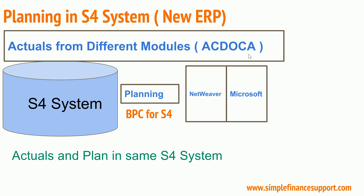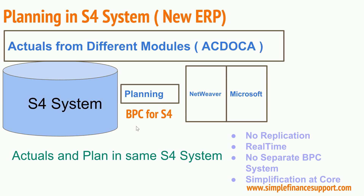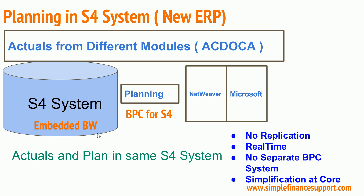The plan data comes from the ACDOCP table — P for plan and A for actuals — so actuals and plan are in the same system. Using BPC functionality, there is no need for replication from a separate BPC system, and it is real-time because you are working directly on the S4 system itself. The simplification is at core, using SAP standard-delivered business content through what is called embedded BW.